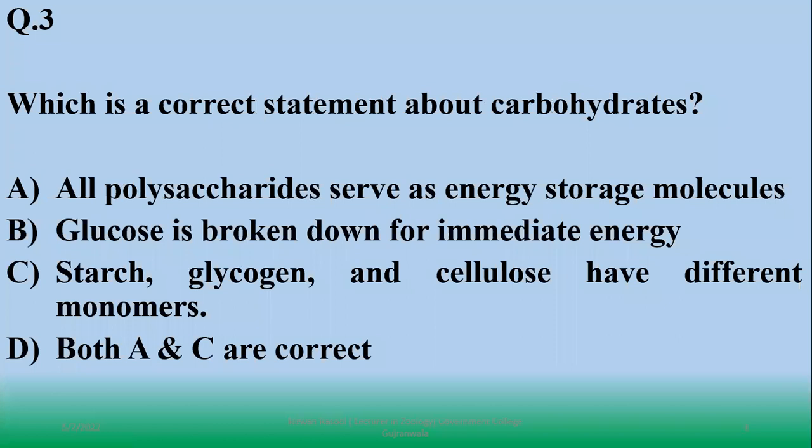Which is a correct statement about carbohydrates? Carbohydrates are stored in starch, and when glucose is broken down for immediate energy, yes. Starch, glycogen and cellulose have different monomers - starch and glycogen's monomers are alpha glucose while cellulose is beta glucose. So right option is B.